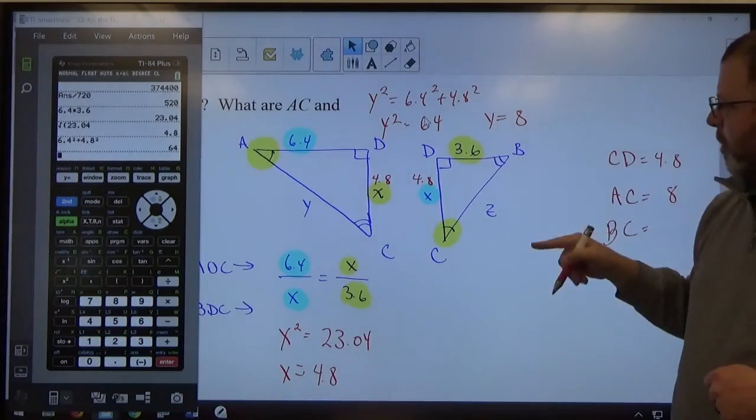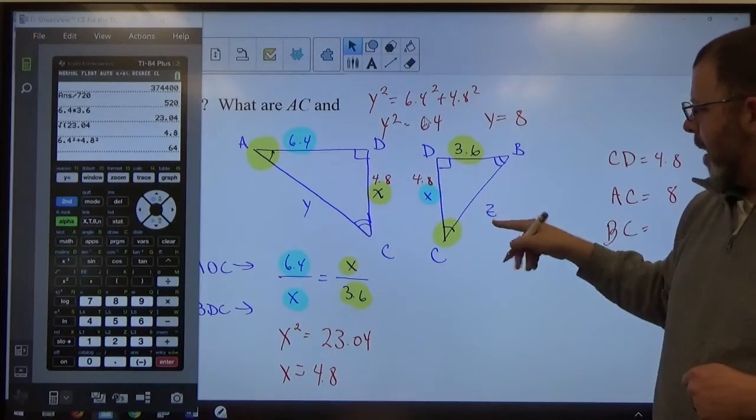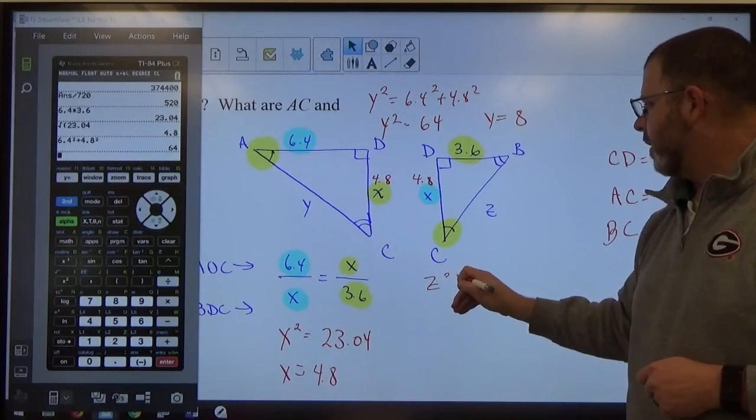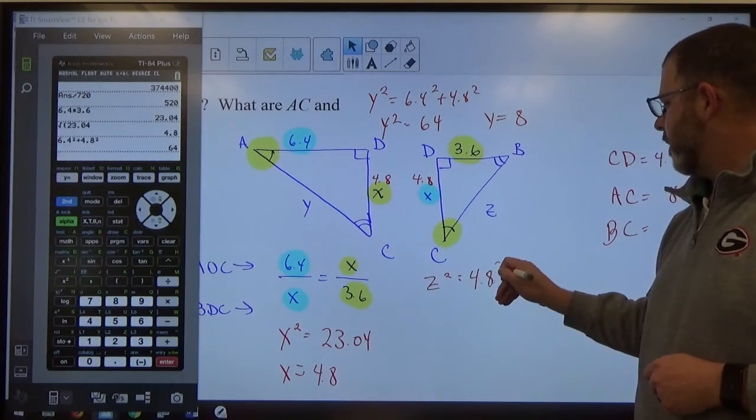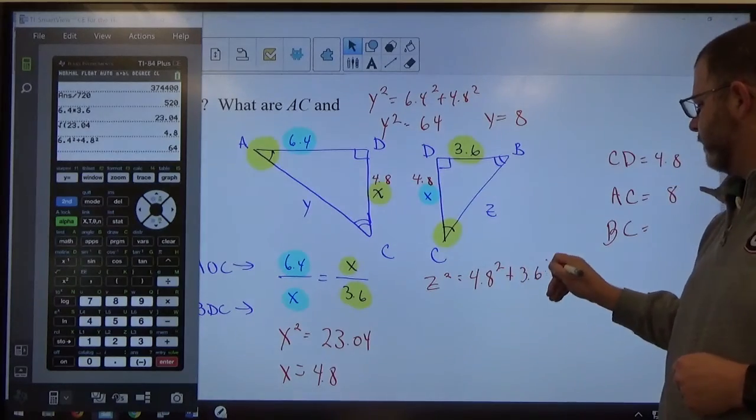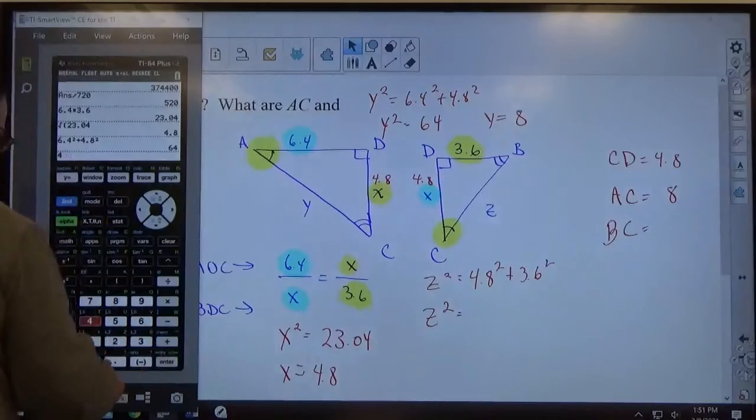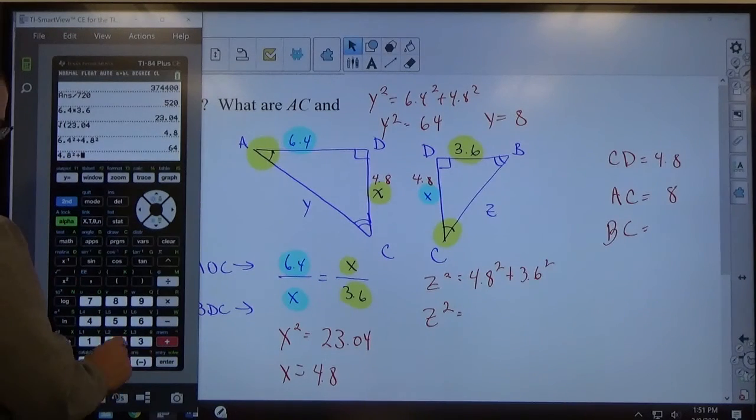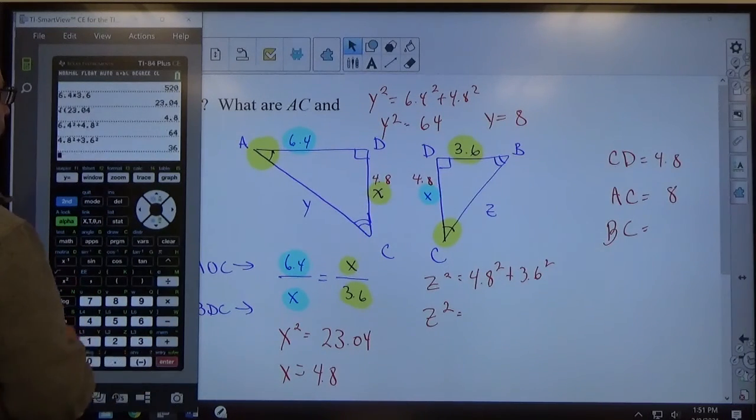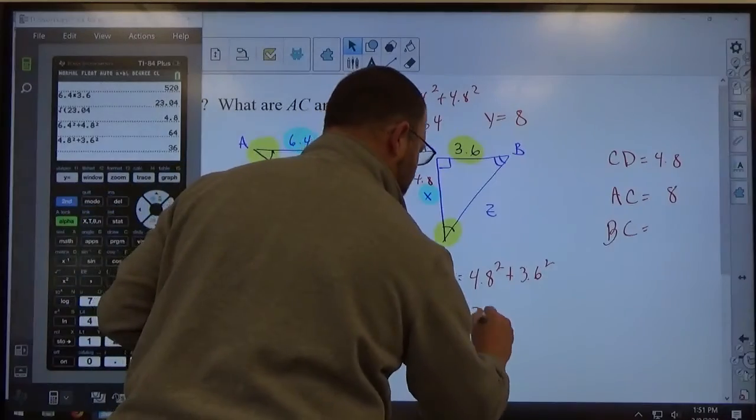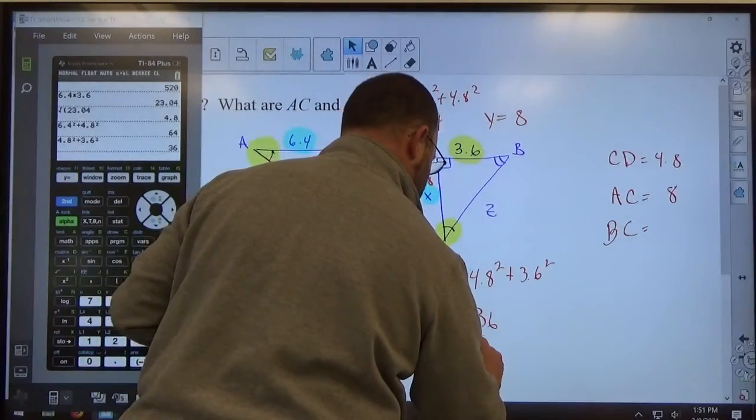If I do the Pythagorean Theorem on BDC, leg, leg, hypotenuse, Z squared equals 4.8 squared plus 3.6 squared. That'd be 4.8 squared plus 3.6 squared. I get 36. So, Z is equal to 6.